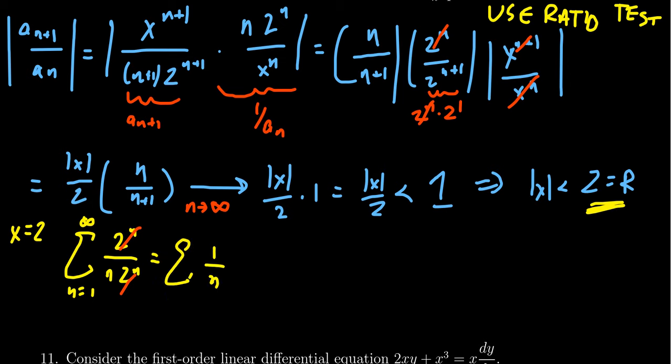We're left with the sum of 1 over n, n equals 1 to infinity. This is the harmonic series, and therefore this is divergent by the p-test or just the fact it's the harmonic series. When x equals 2, we get divergence, so do not include that in the interval of convergence.